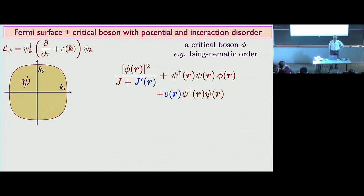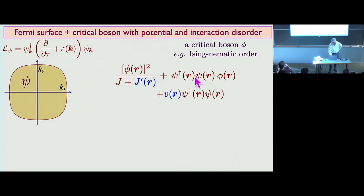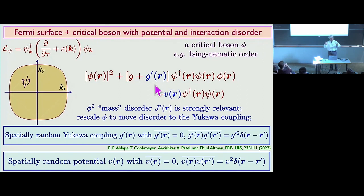So we put in the disorder in J — we add a small random J-prime. For various technical reasons it's much nicer to rescale phi and put the disorder in this term, so we rescale phi and now the Yukawa coupling G has a correction G-prime which is spatially random. There are two sources of disorder: the potential V and the coupling G-prime, and we take them to be Gaussian random fields which are delta-correlated in space.